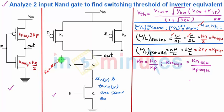That means we know that Kn is equal to mu N COX W by L or in simple words we can say that Kn is directly proportional to W by L and hence the law which we write for W by L the same holds true for Kn as well.